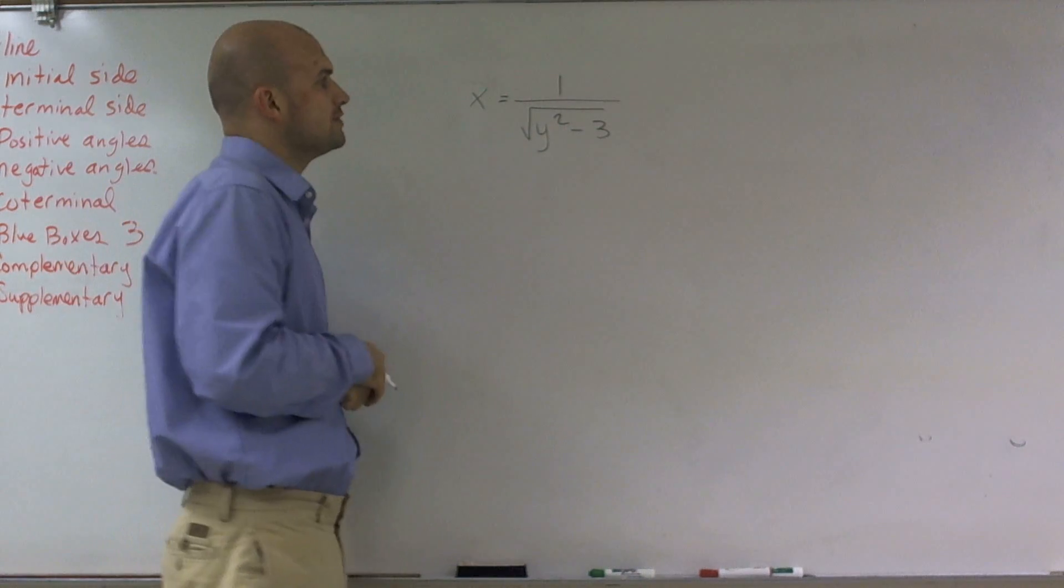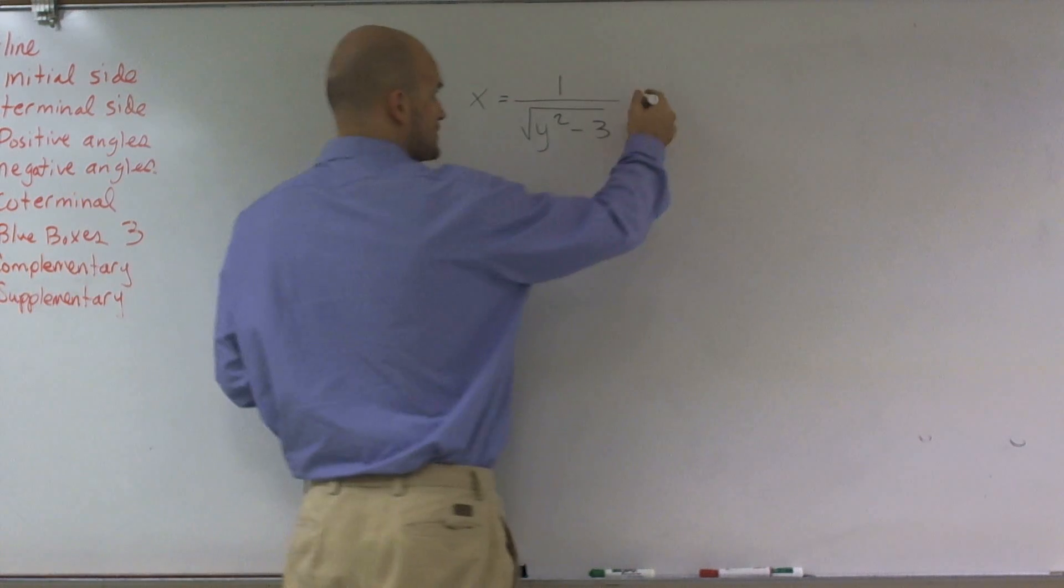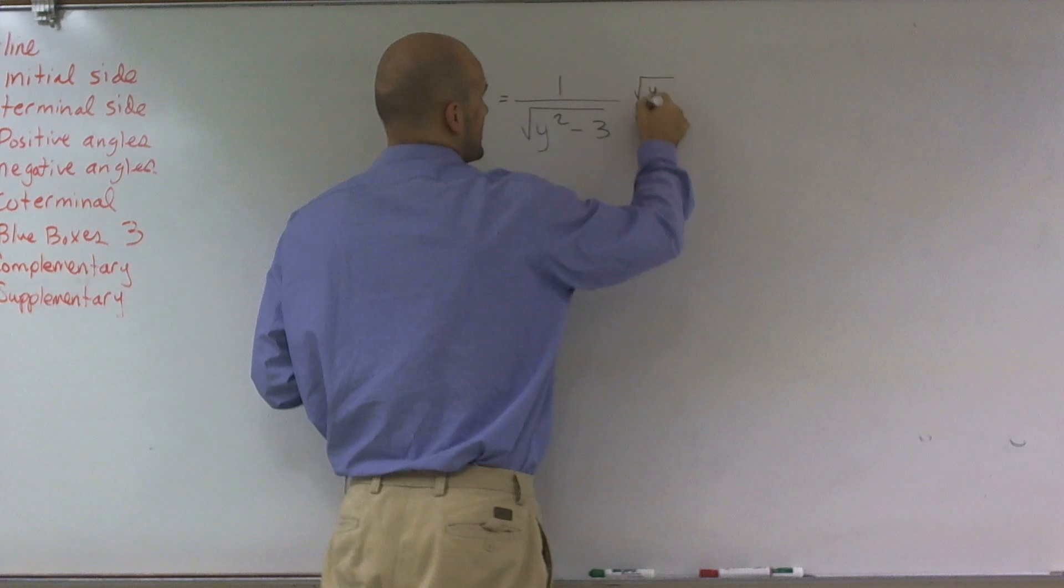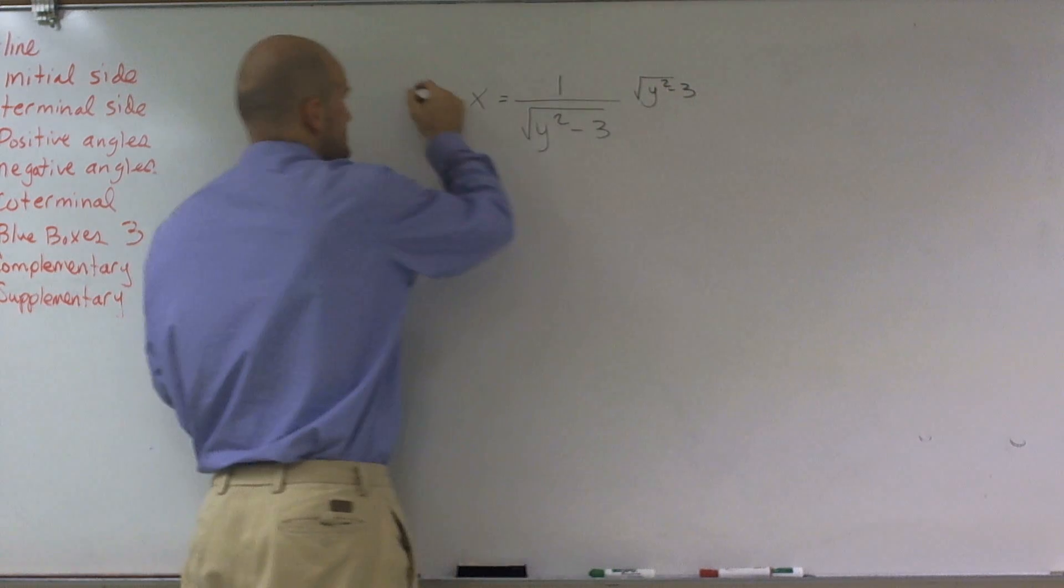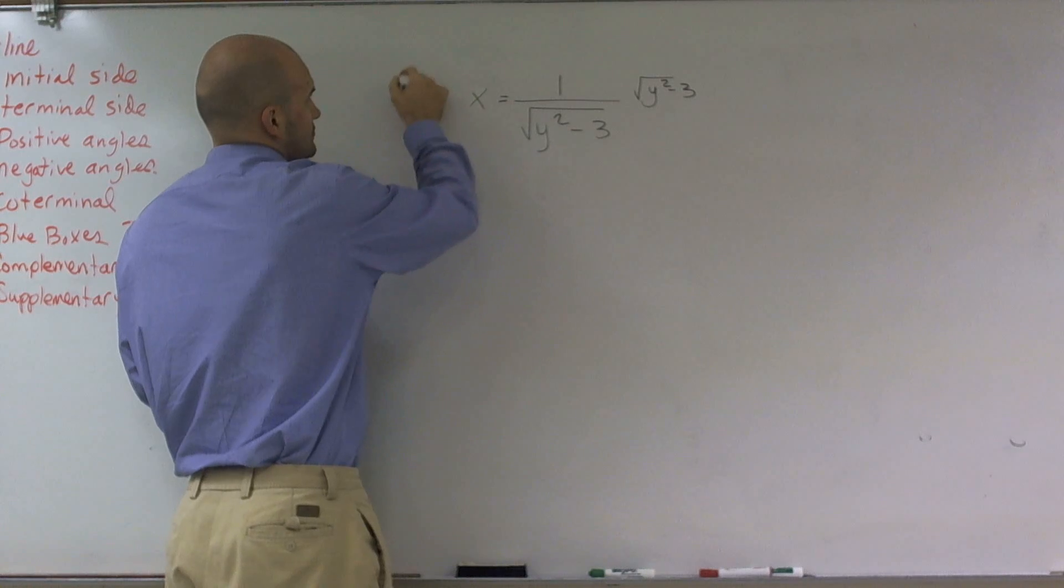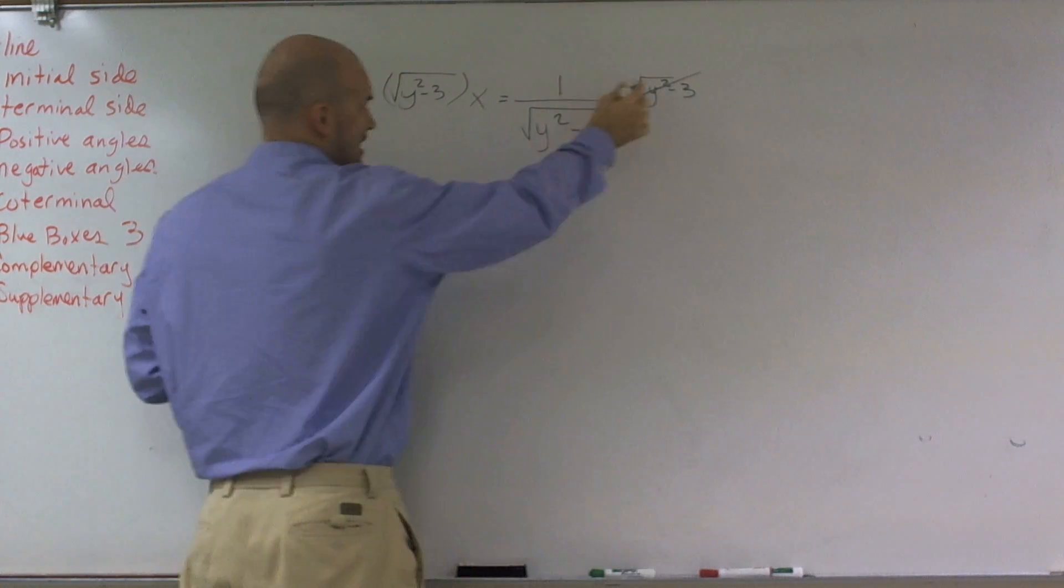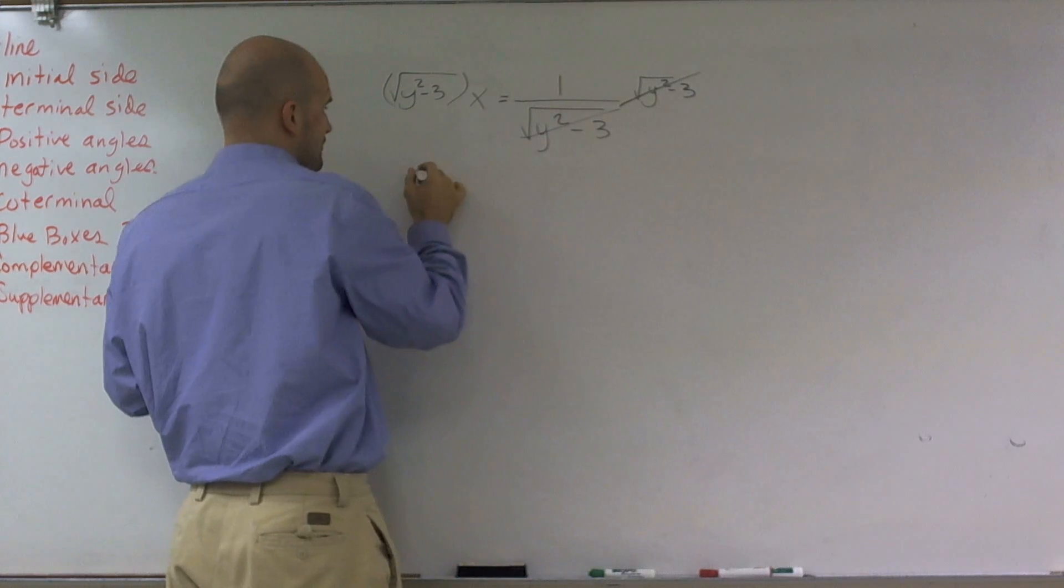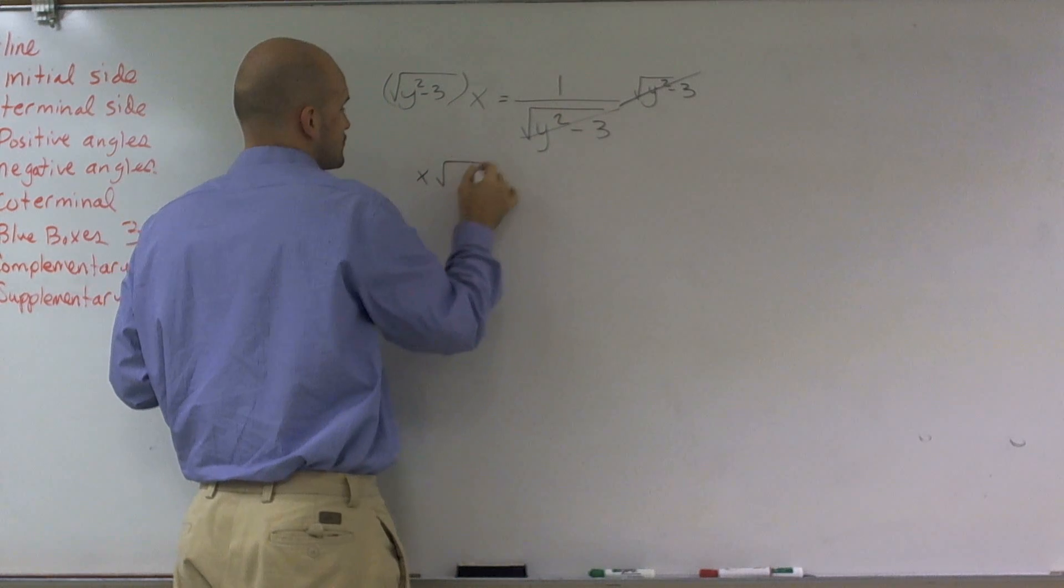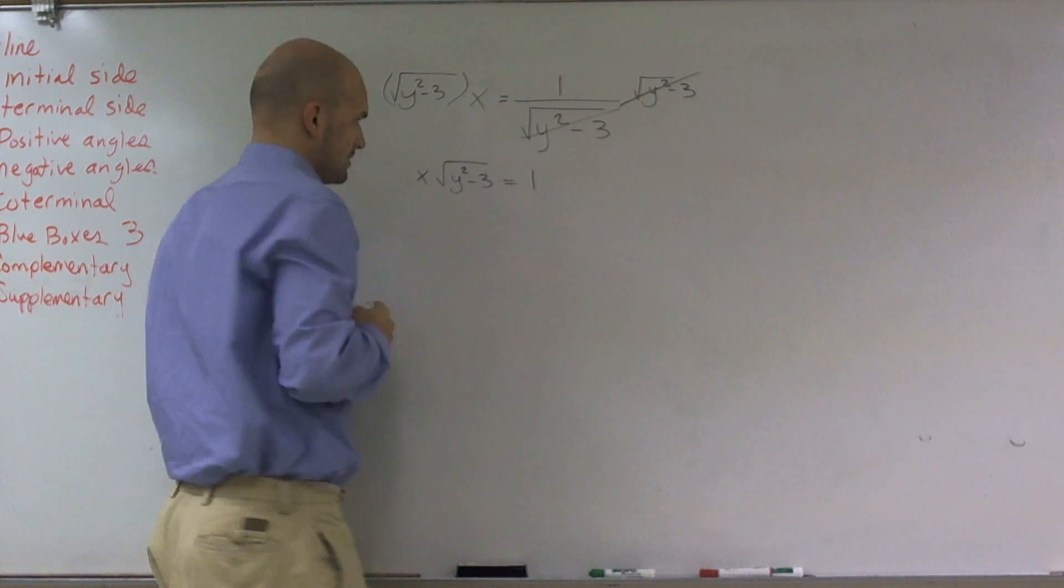I have a square root of y² minus 3 on the bottom. I have to get rid of that. So the first thing I'm going to do is multiply by √(y² - 3) on both sides. That's going to cancel out. Therefore, I'm left with x times √(y² - 3) equals 1.